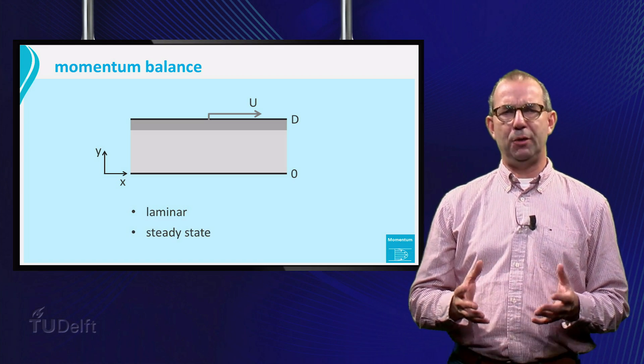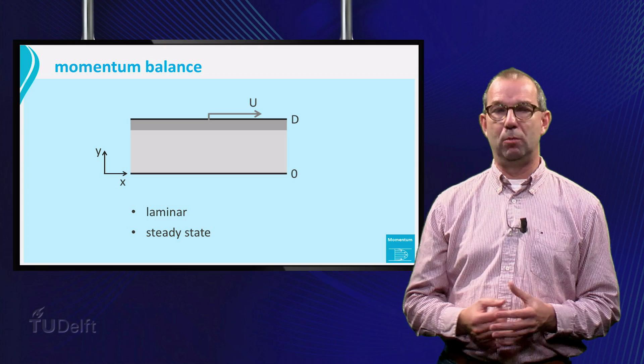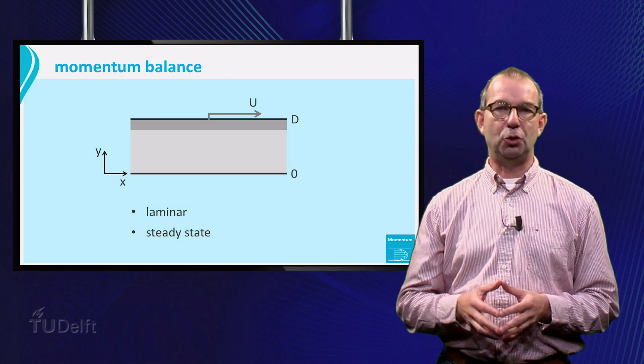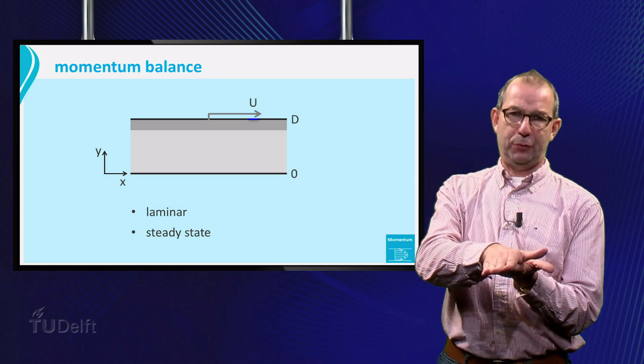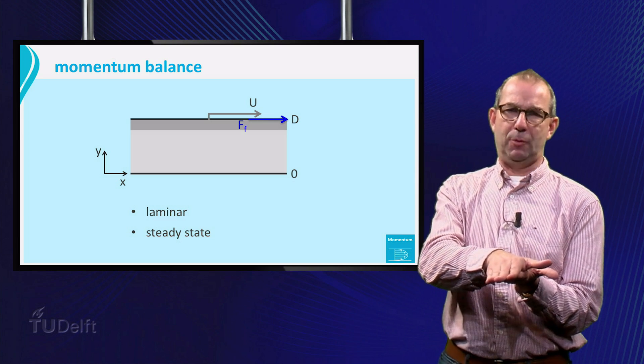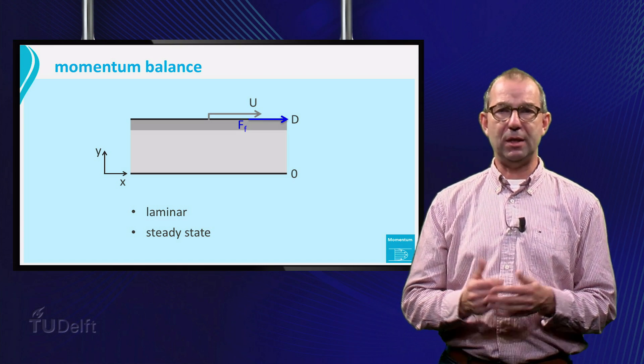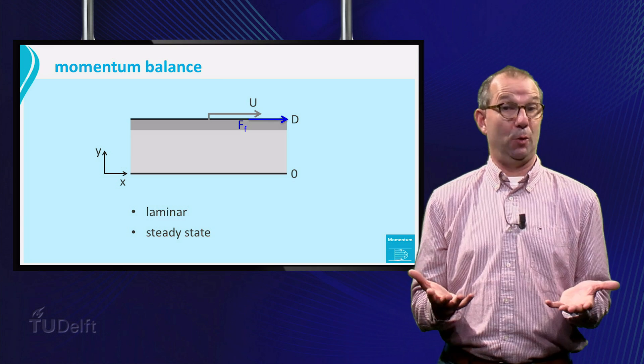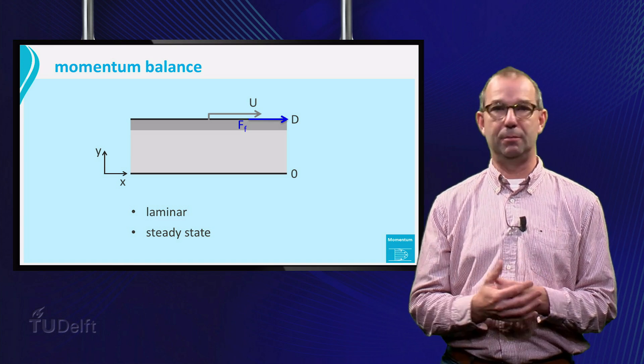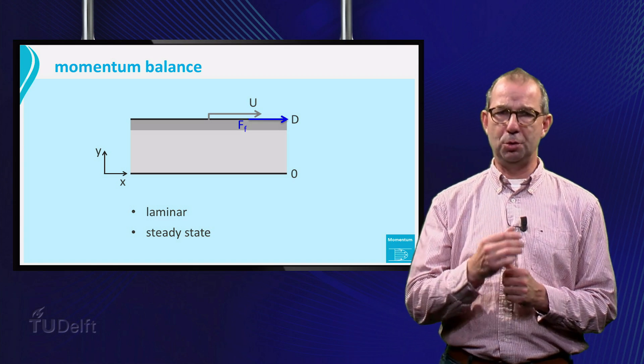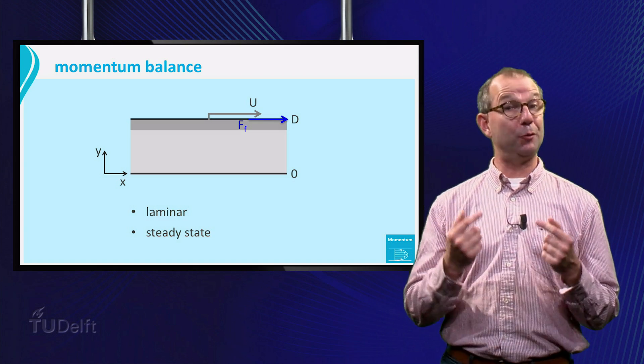Alright, why will the fluid be flowing anyhow? In this case that is clear. The top plate is exerting a friction force in the positive x-direction on the fluid layer below it. Initially there is no other force, as nothing is flowing yet, acting on this layer. So according to Newton, the layer will have to move.